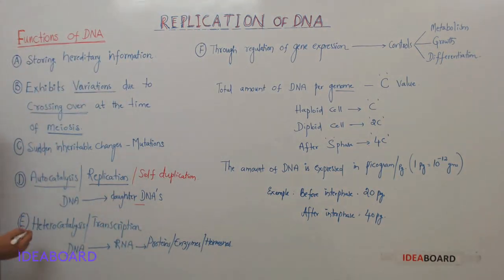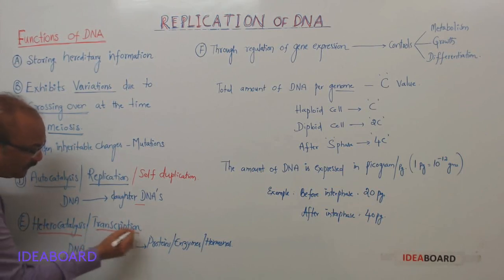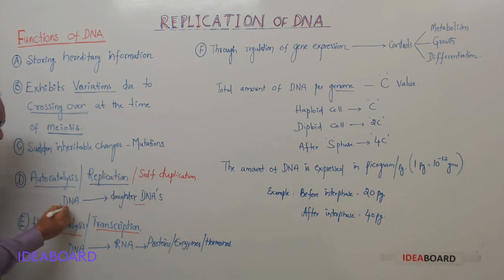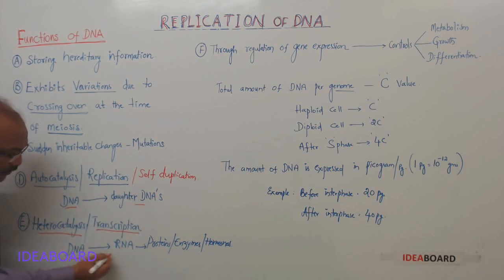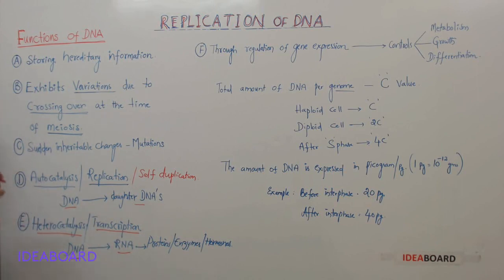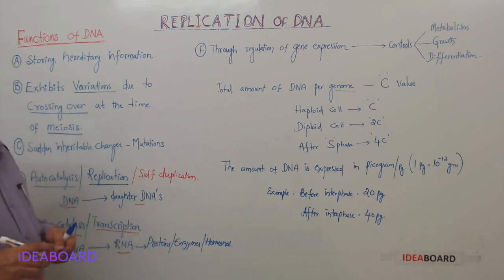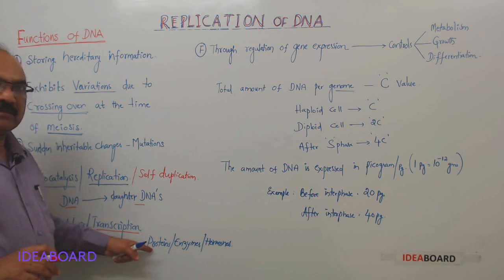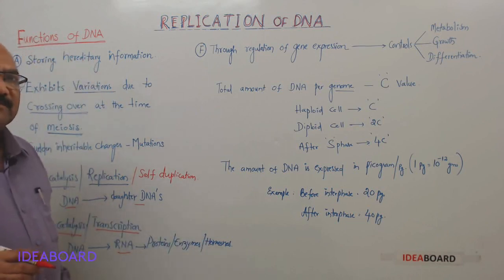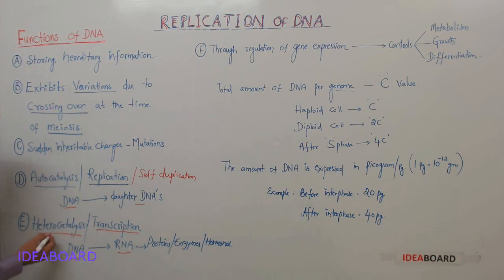Another important function is hetero-catalysis, also called transcription. This is called hetero-catalysis because DNA is producing a different molecule — DNA produces RNA. The formation of RNA from one strand of DNA is called transcription or hetero-catalysis. That RNA undergoes translation and helps in the formation of proteins. Some of these proteins behave as enzymes and some as hormones.